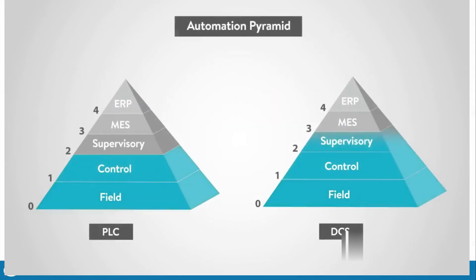DCSs also have a claim that when safety is a top priority, the DCS is the most reliable system. The reason for this is because the manufacturer supplies both the control and supervisory equipment as an integrated package, so the risks of integration errors are greatly reduced.